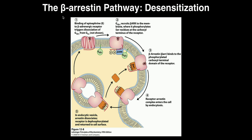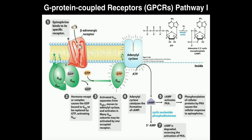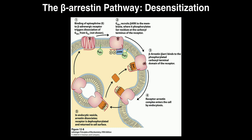As we've seen many times throughout this playlist, here's our beta adrenergic receptor, which is a type of G protein-coupled receptor. Epinephrine binds to it and triggers dissociation of the alpha subunit of the G protein from the beta and gamma subunits. The alpha subunit is gone, and all we have left here are the beta and gamma regulatory subunits.